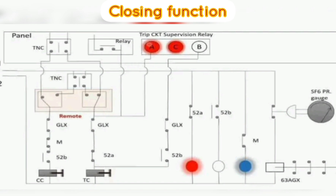Next we learn about the circuit breaker closing and tripping diagram without anti-pumping features. Closing function: the diagram shows the breaker in closed condition. When the TNC switch is operated towards close and auxiliary contact 52B remains in the NC position, the breaker gets closed and a contact changeover takes place, thus opening the 52B contact and closing the 52A contact of the trip circuit.